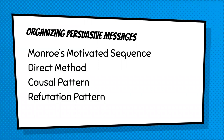There are four ways to organize the persuasive messages we have talked about. You have Monroe's motivated sequence, the direct, causal, and refutation. Remember, we have our three types — questions of fact, questions of policy, and questions of value — and then we can organize those in these four ways.